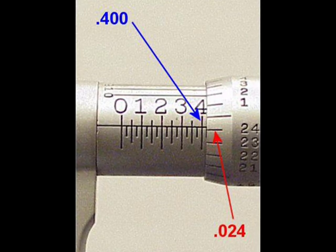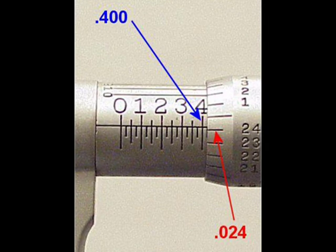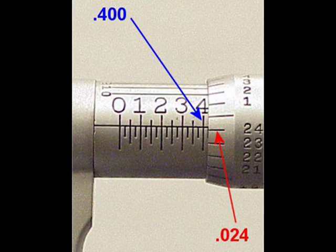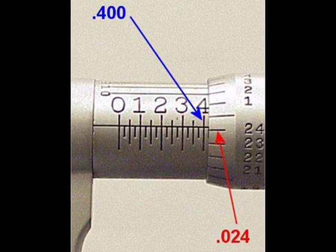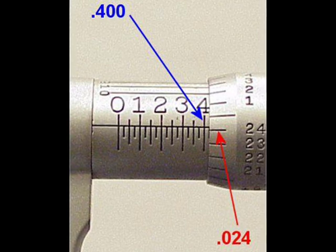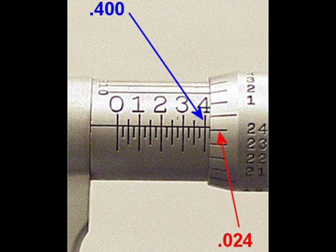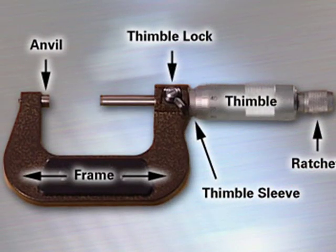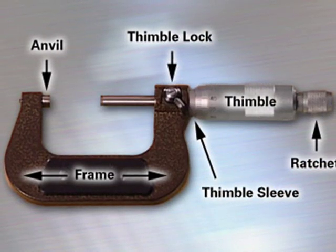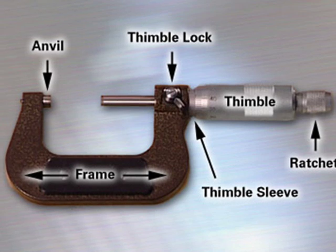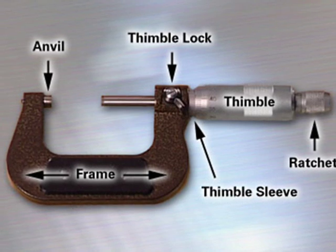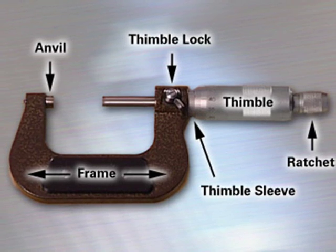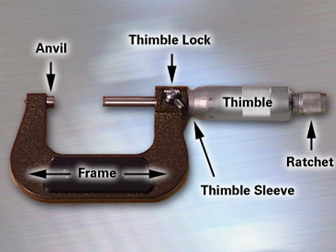A micrometer is composed of a frame, the C-shaped body that holds the anvil and barrel in constant relation to each other. It is thick because it needs to minimize flexion, expansion, and contraction, which will distort the measurement. The anvil is the shiny part that the spindle moves toward and that the sample rests against. The sleeve, barrel, or stock is the stationary round part with the linear scale on it, sometimes with vernier markings.